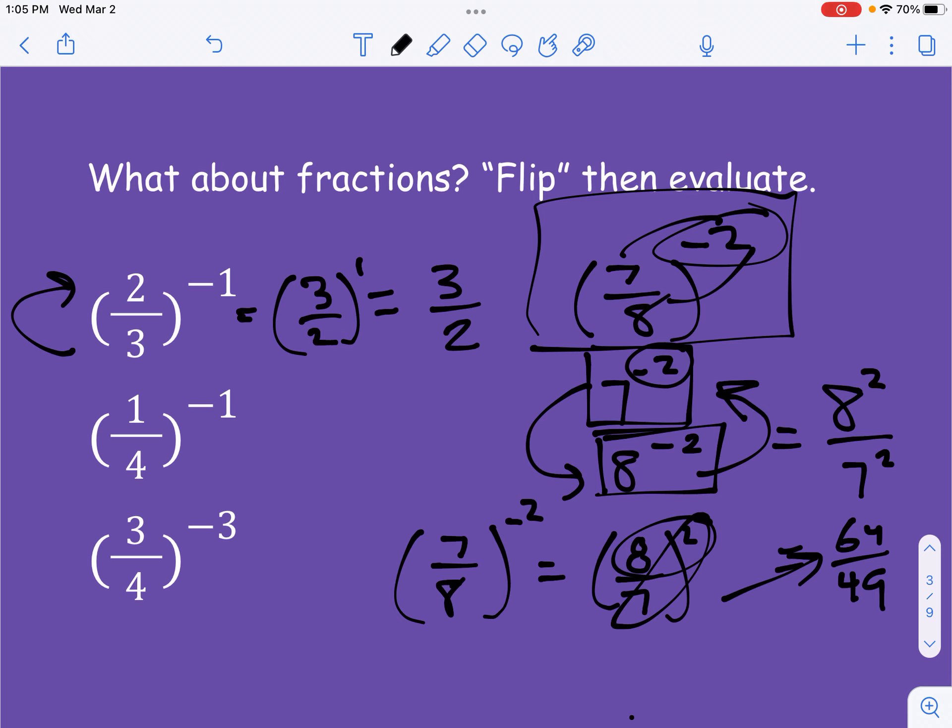Let's look at this one. We're going to flip this one because it's got a negative exponent, so it becomes 4 over 1 to the 1, which is just 4 over 1, and we can simplify 4 over 1 just as good old 4.